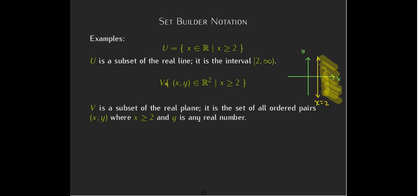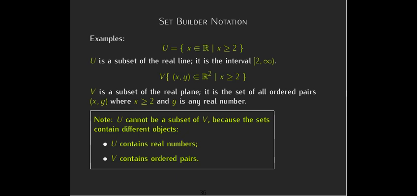Now, notice, even though we use this same description, that u contains completely different objects from v. u contains just simply real numbers or scalars, and v contains ordered pairs. So, there's no way that u can be a subset of v. So, this can be really confusing.